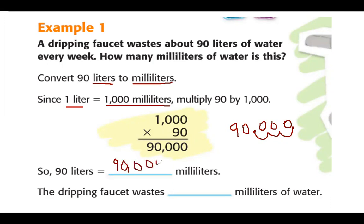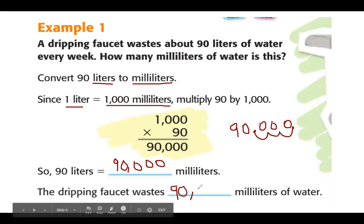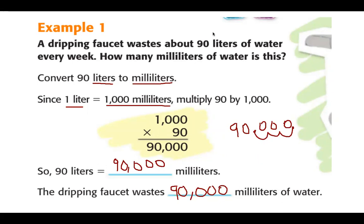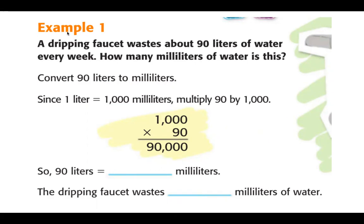So 90 liters is equal to 90,000 milliliters. To answer the question, a dripping faucet wastes 90,000 milliliters — and there's a reminder to make sure faucets are all the way off so we don't waste water. Let's move on to our next example.